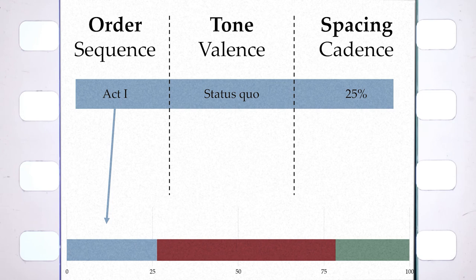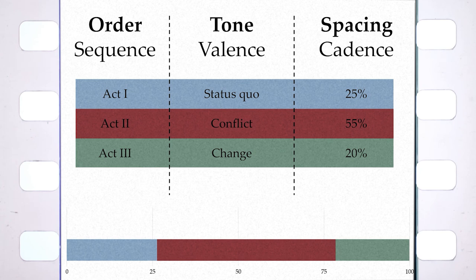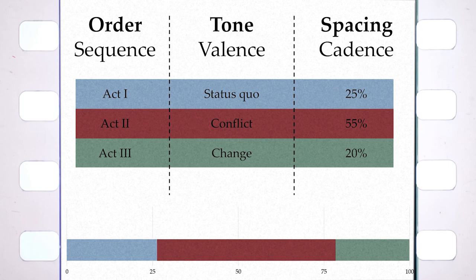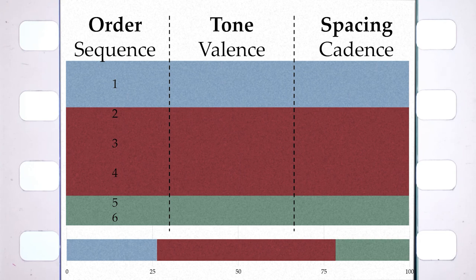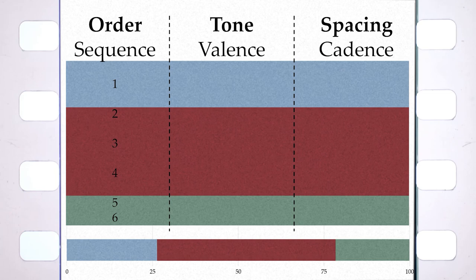There are three acts. Act one runs about a quarter of the runtime and introduces one way of living. Act two runs a little over half the runtime and shows us the opposite way of living. Act three runs about a fifth of the runtime and shows us a superior admixture of both ways. Overall, the three acts show us the most important events in a character's life and build up to a major transformation that the audience finds cathartic. There are six major beats sprinkled across the three acts, and these beats occur with the same order, tone, and spacing regardless of how the story events are presented — for example, Memento has structure even though it's presented all jumbled up.